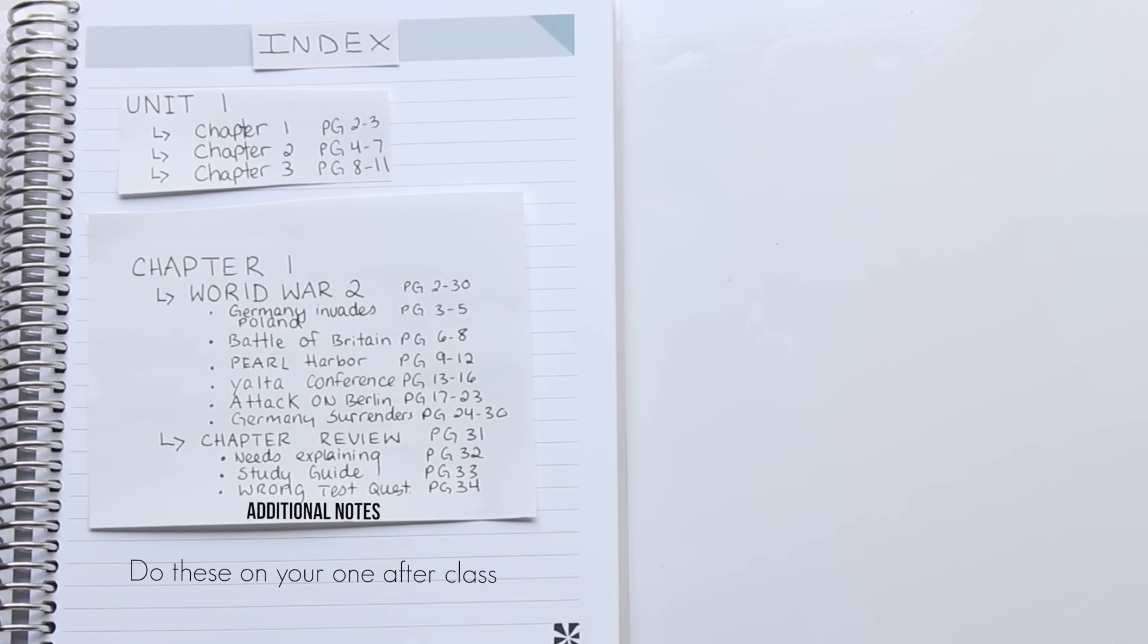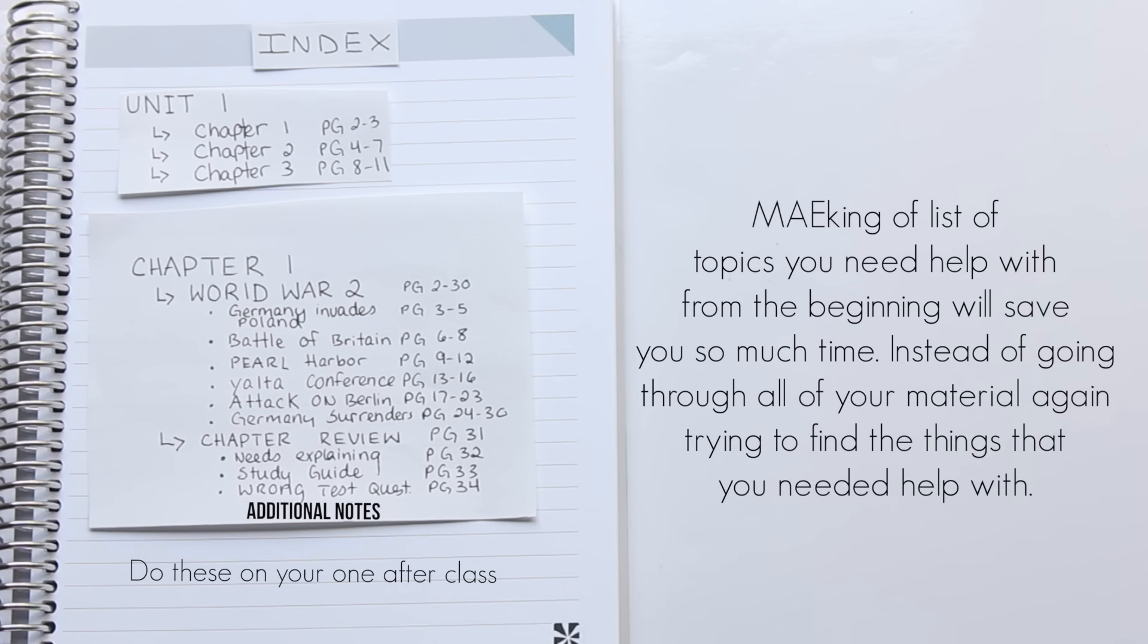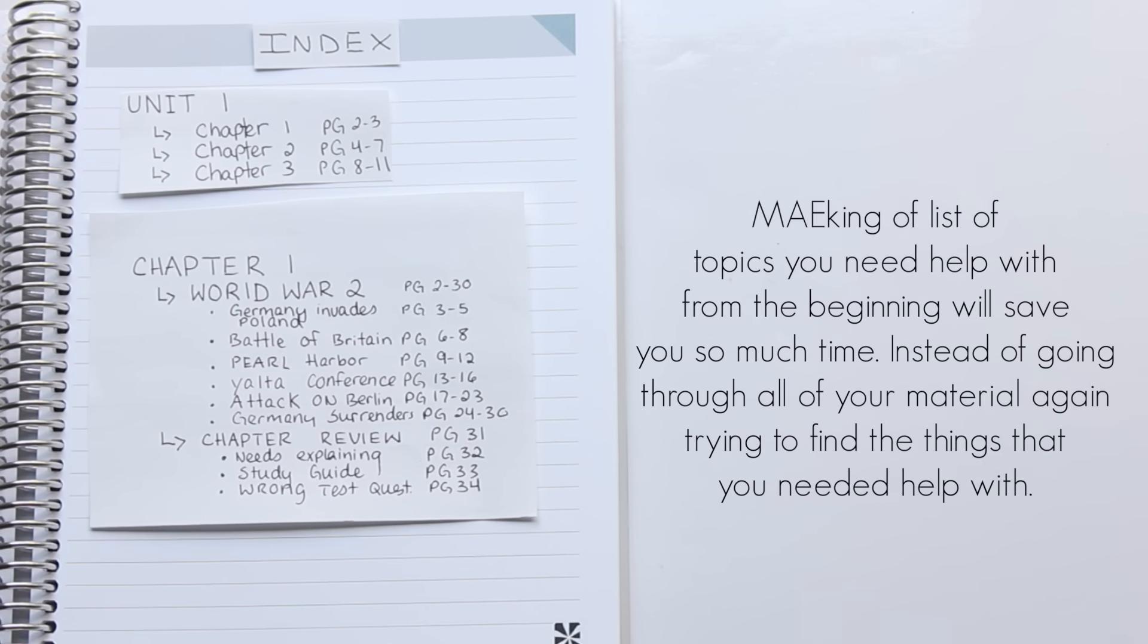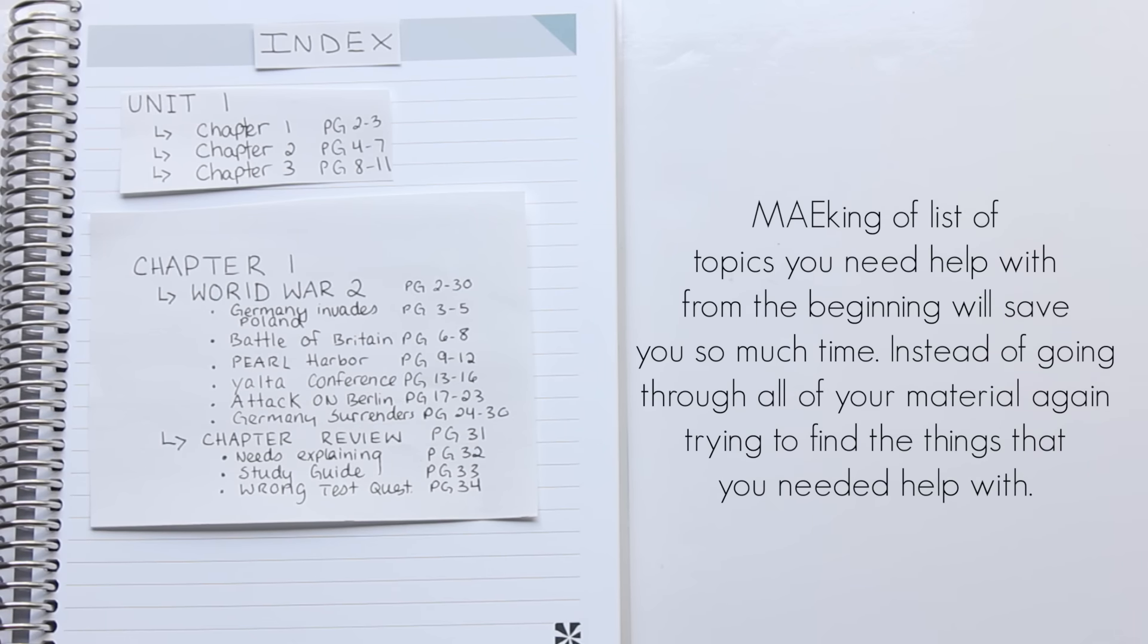Now here's where it becomes a much more functional way to plan your notes. I have an additional section for chapter reviews, needs explaining, study guides, and wrong test questions. That's not even something I used to do with my school notes, but I wish that I had because it would have made studying and reviewing so much faster and more efficient. By the time you get to your test, you'll be able to track back all of the things that you may not have remembered or understood as you were going through the chapter, and it's all right there already for you.